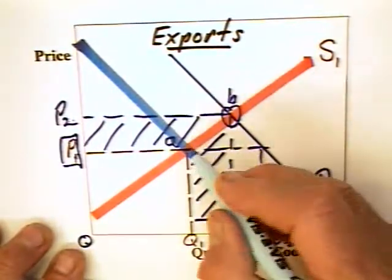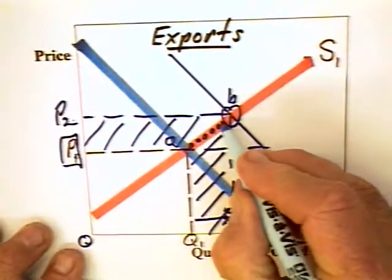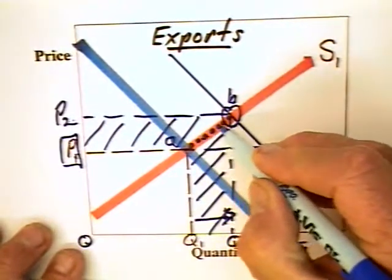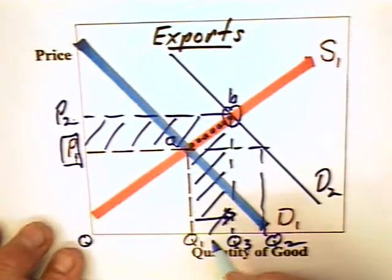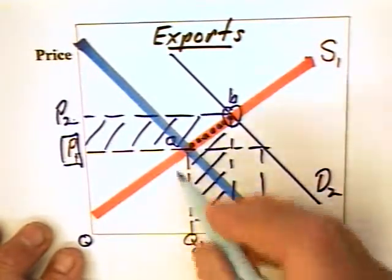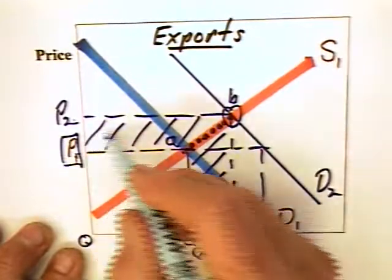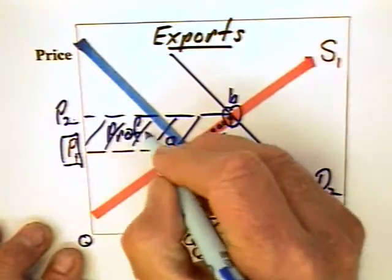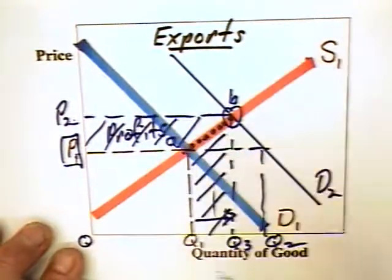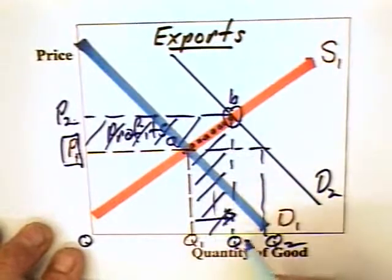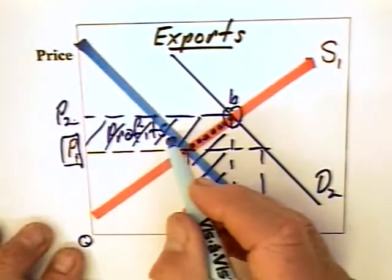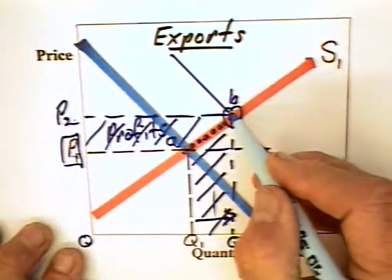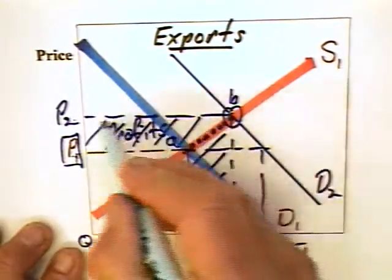We note that the additional cost of producing these additional units is represented by the supply curve. If we add up all of these marginal costs of producing these units, we get a total increase in cost equal to Q1, A, B, Q3. But revenues has gone up by this amount, which means that one of the reasons exporters love exports is not only does it increase their revenues and output, but more importantly, it increases their profits to the tune of P1, P2, B, A, this area right there.